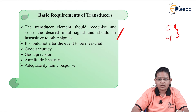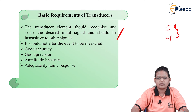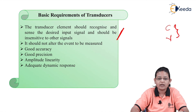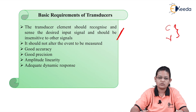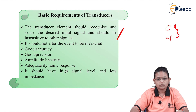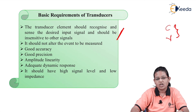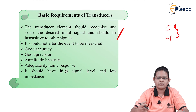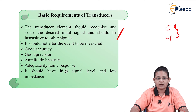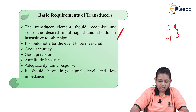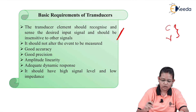Next is adequate dynamic response. As we just saw in the dynamic characteristics, a basic requirement for choosing a transducer is that it should give adequate dynamic response — meaning we should get all values related to delay time, rise time, and maximum overshoot. It should also have high signal level and low impedance, because if impedance changes, the current and electrical quantities in the transducer will change, which is not desirable for the output.